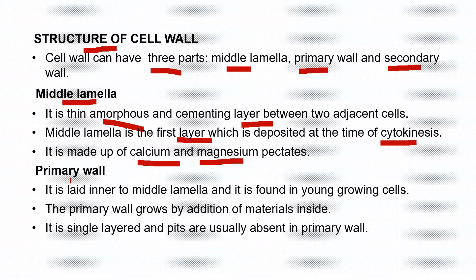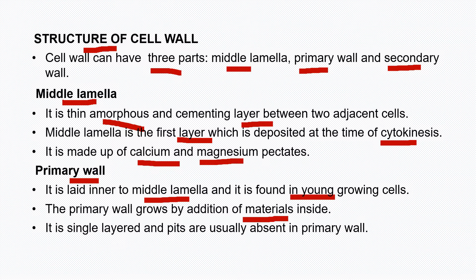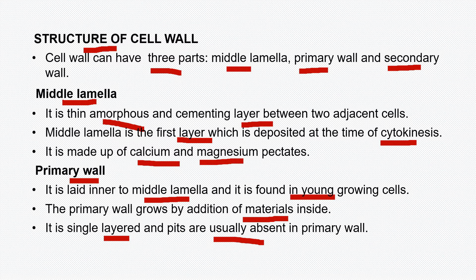Primary wall is laid inner to the middle lamella and it is found in young growing tissue. As the cell gets older, it starts to diminish. Primary wall grows by addition of materials toward the inner side. It is a single layer and pits are generally absent in case of primary wall. Pits are basically indentations of cell wall which are used for intercellular transportation.